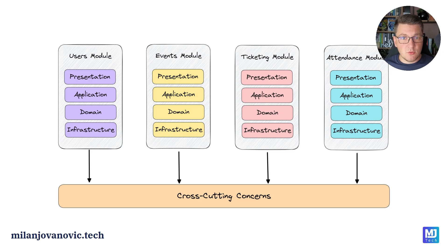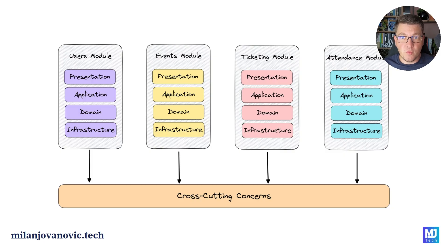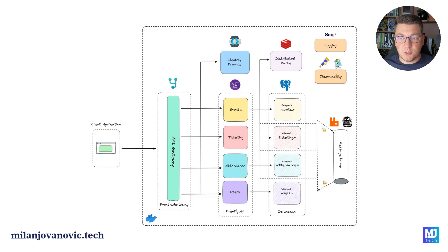On a higher level, you can apply vertical slice architecture across your entire system, grouping high-level components into slices that encapsulate related functionalities — we could call these modules. For example, an event management system might have a users module, events module, ticketing module, and attendance module, each acting as a distinct vertical slice. This is essentially the modular monolith architecture, where four distinct modules are deployed inside a single application, each with its own schema in the database.